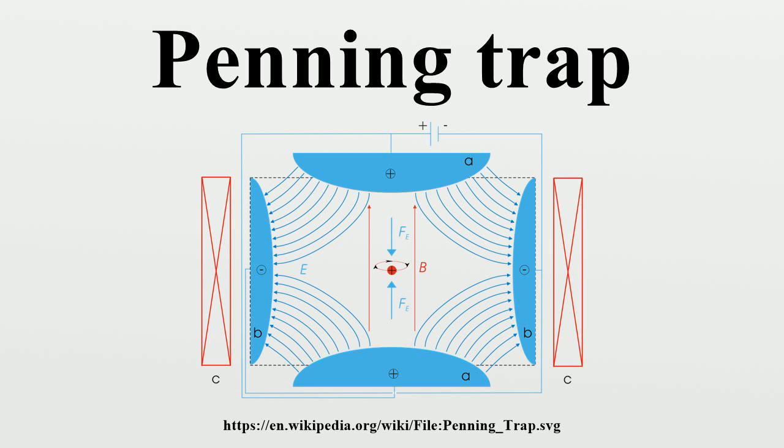Operation: Penning traps use a strong homogeneous axial magnetic field to confine particles radially and a quadrupole electric field to confine the particles axially. The static electric potential can be generated using a set of three electrodes, a ring and two endcaps.